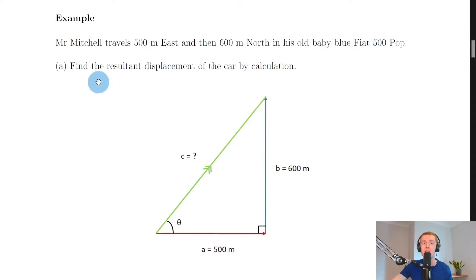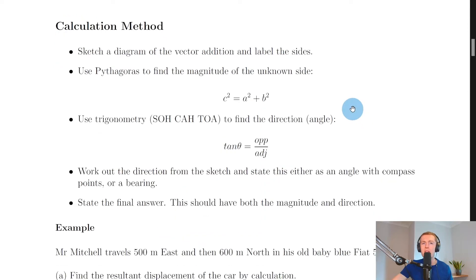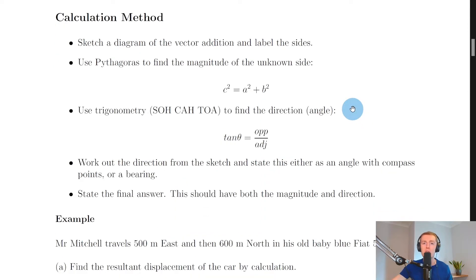And it says find the resultant displacement of the car by calculation. So instead of using scale diagram this time, it wants us to do it by calculation, and you might be thinking that since we've got a right angle triangle we're going to be using Pythagoras. So the first step is to sketch a diagram of the vector addition and label the sides.